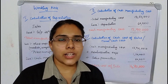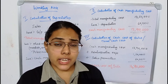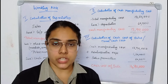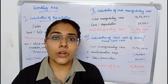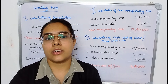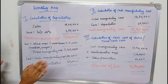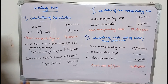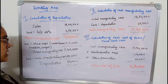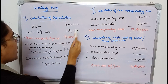Before going to the solution, let us prepare some working notes. First, we need to calculate the amount of depreciation assumed in the cost of production. Note that depreciation is assumed to occur only in the factory and not in administrative expenses. We start by finding sales — 18 lakh — and deducting the gross profit of 25%, which is 4 lakh 50 thousand.